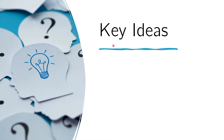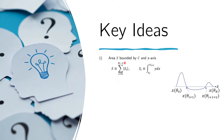Let us list down a few items that might help us solve the problem. First, the area S bounded by C and the x-axis is actually the sum of the areas of the individual parts. So the total area S is the sum of the area here, the area here, and the area here.